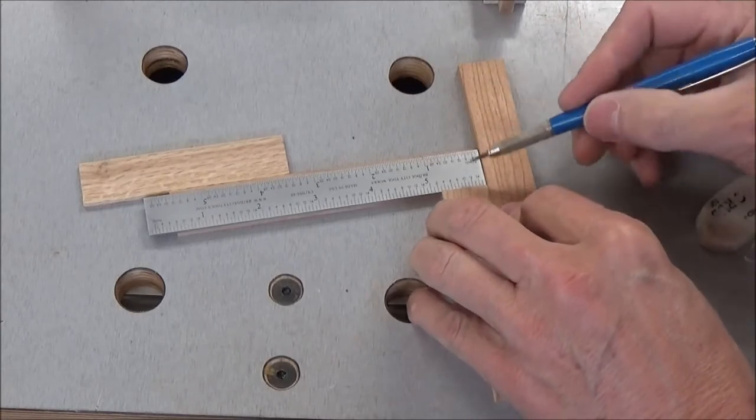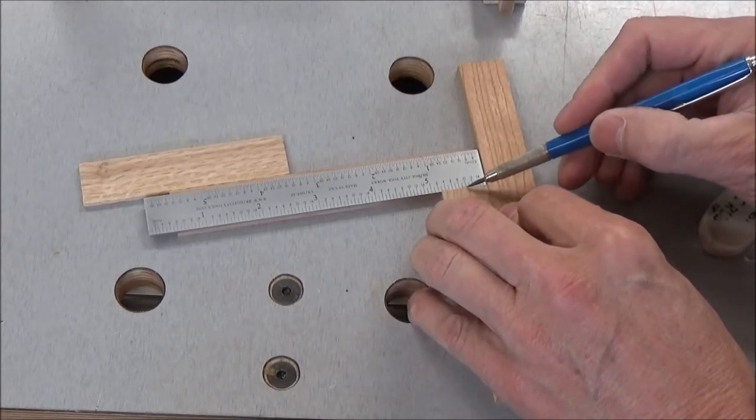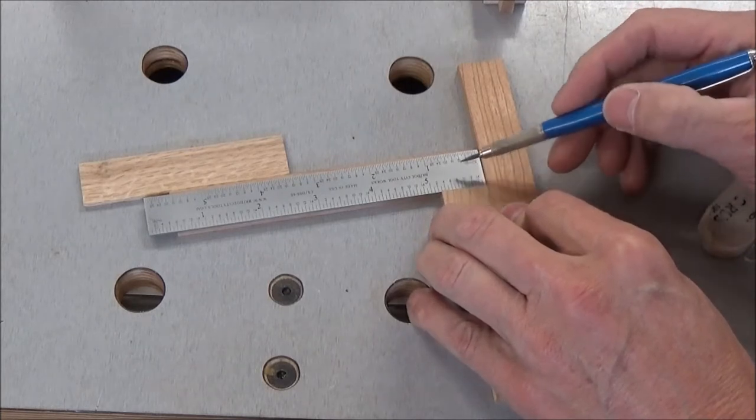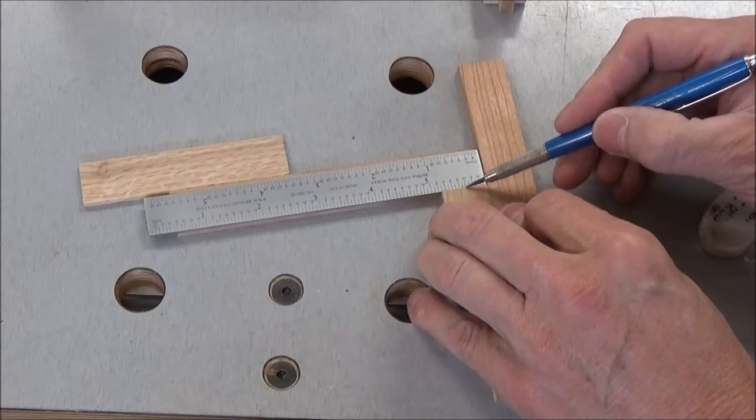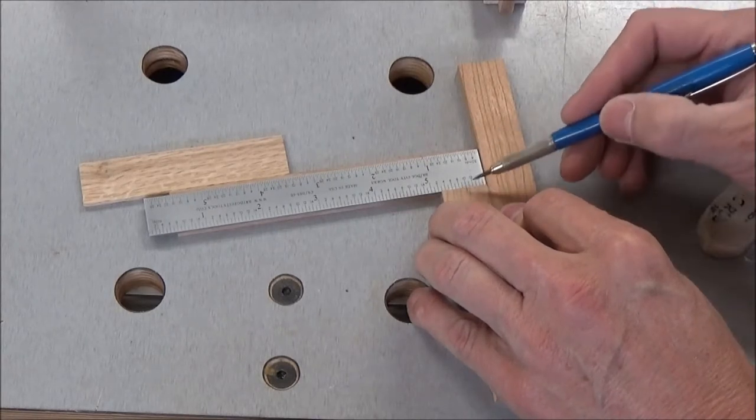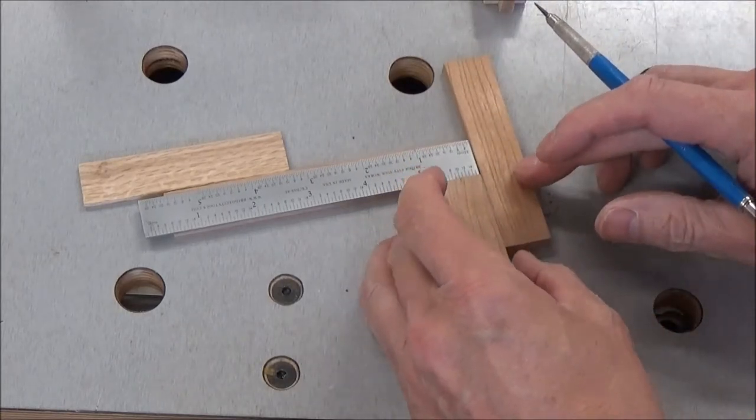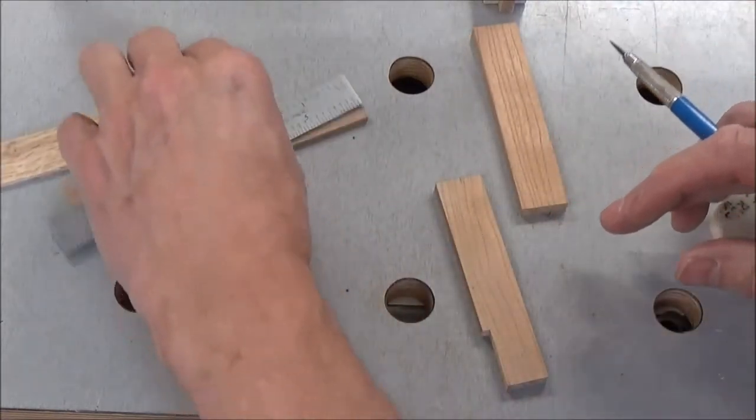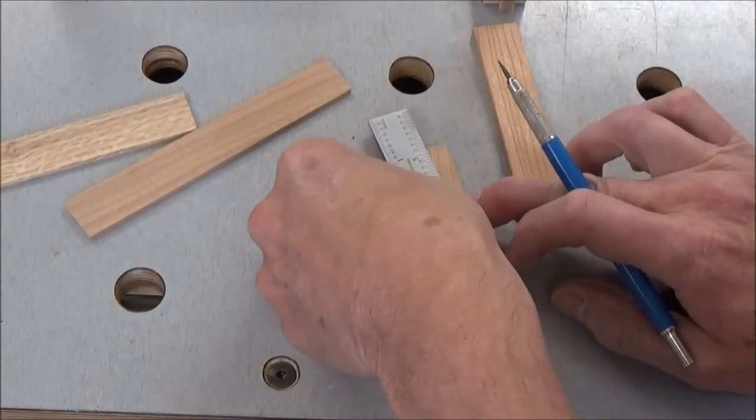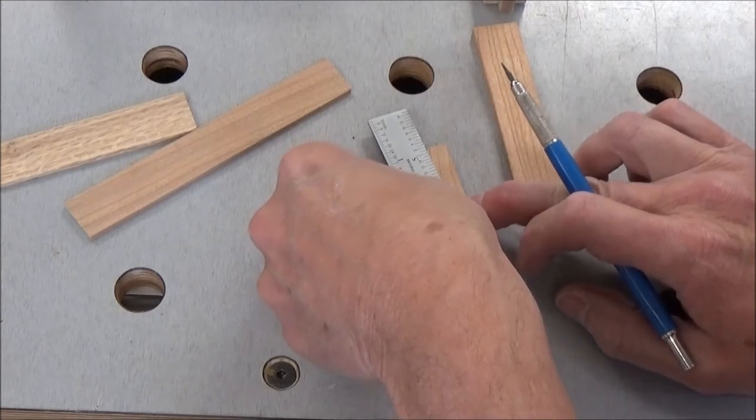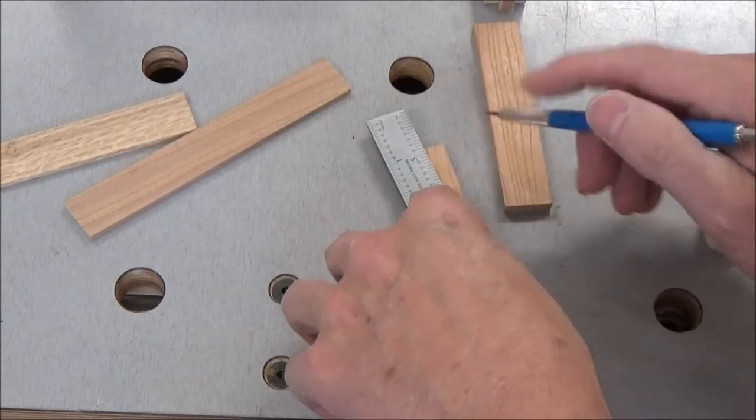I'm going to lay out the taper on the long piece here. I'm coming in one, two, three-eighths. These are a little bit wider than three-eighths, but I'm going to go with the three-eighths measurement right there. Then I'm just going to connect the dots from that point down to the end.